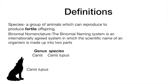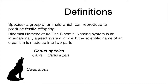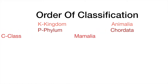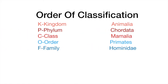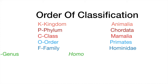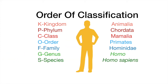The order in which animals are classified is: kingdom, phylum, class, order, family, genus and species. You can make some sort of abbreviation if it makes it easier for you.